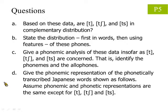Question D asks you to give the phonemic representation of the phonetically transcribed Japanese words. Furthermore, apart from [t], [ts], and [ch], you may assume that the phonemic and phonetic representations of all other sounds are the same. In other words, apart from the sounds [t], [ts], and [ch], you may simply copy the transcription already provided.